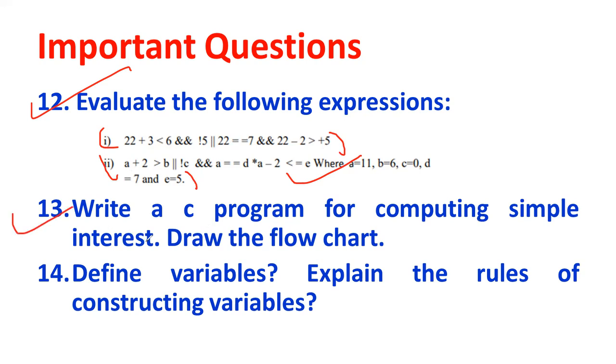Then, write a C Program for computing simple interest. I is equal to PNR, PNR by 100. How to write it? Draw the flow chart also. Define variables. Explain the rules of constructing the variables. This is also very important. Theory type questions.